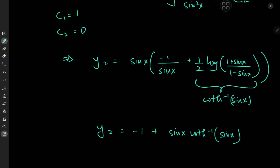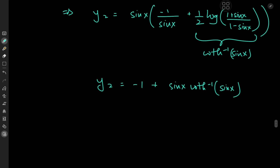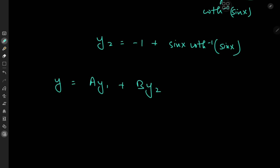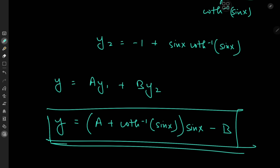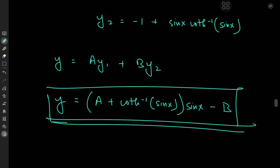I wonder if anyone got that guess correct in the comments. Anyway, we now have both y1 and y2, so the general solution is a linear combination: a times y1 plus b times y2. Expanding a little, we can factor out sine x terms, giving us the quantity a plus b times the inverse hyperbolic cotangent of sine x, all times sine x, minus b. That looks extremely cool. I hope you enjoyed the video and learned something — be sure to like and subscribe, follow on Instagram, and consider supporting the channel on Patreon. See you next time.